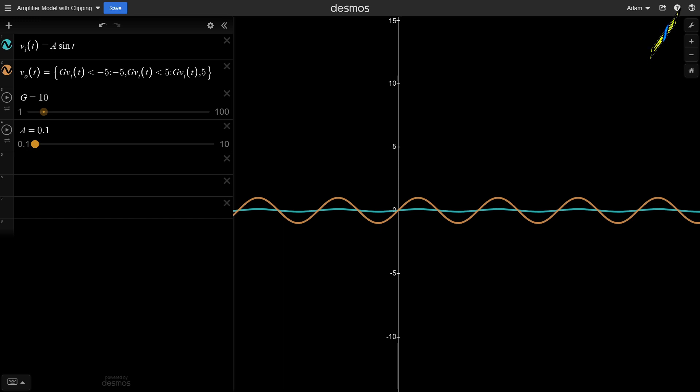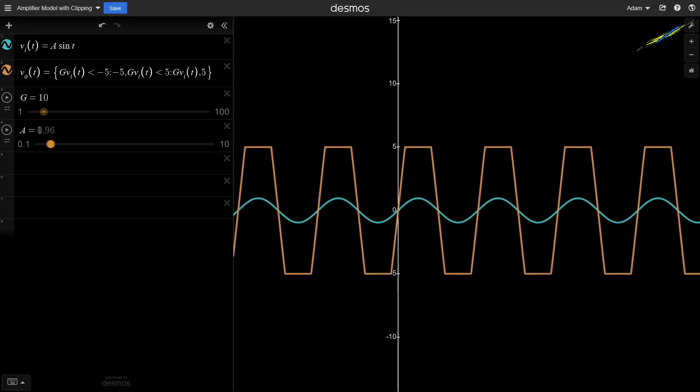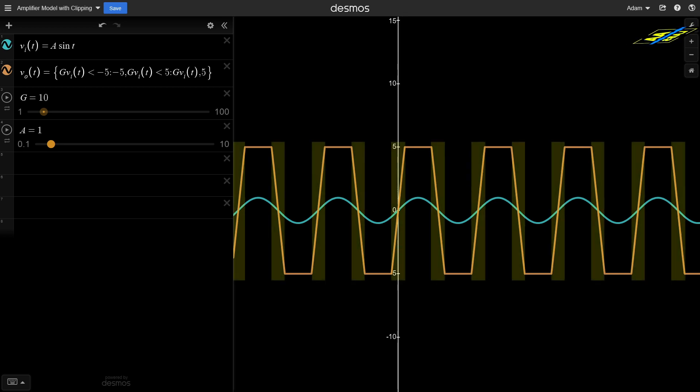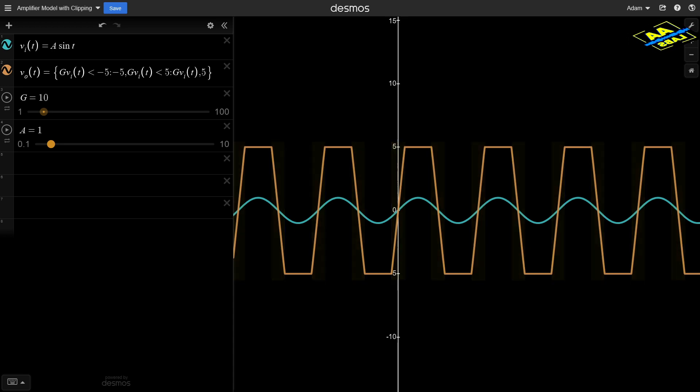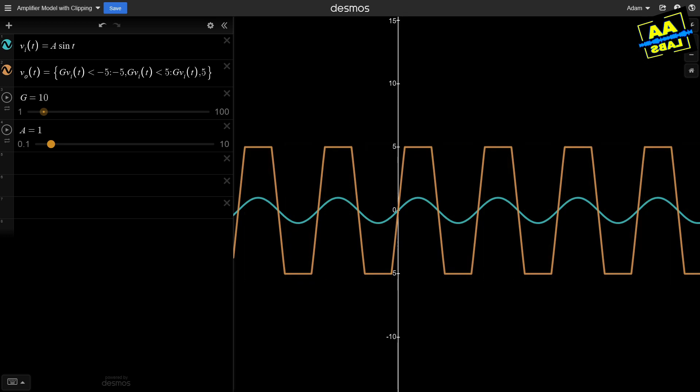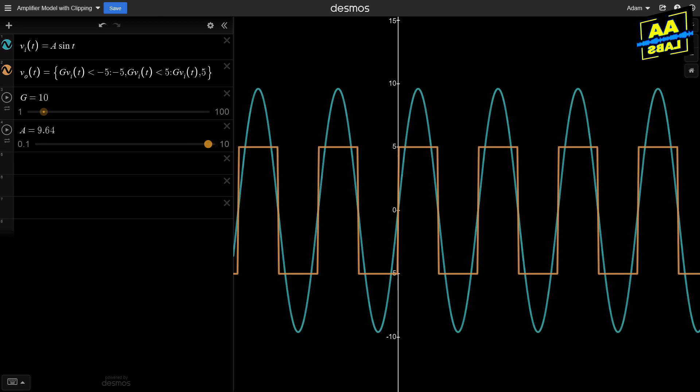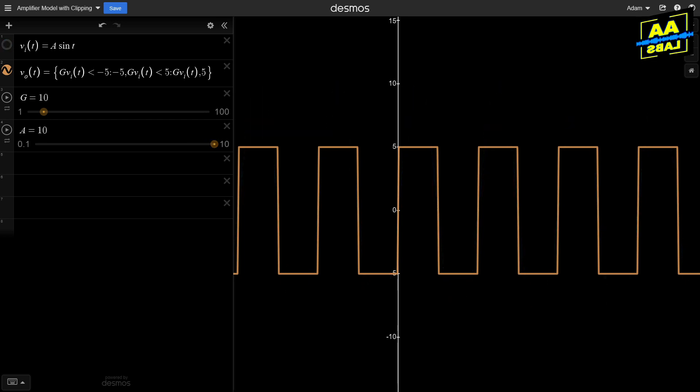For example, let's say we have an amplifier with gain 10 and a saturating voltage of plus or minus 5 volts. We then input a sine wave with amplitude 1. On the output, the shape of the sinusoid is only faithfully represented for the parts of the cycle when the magnitude of the input is less than a half volt. When above this limit, the output gets pegged to plus or minus 5 volts. The output is said to be clipped. If we increase the amplitude of the input sine wave, the output basically becomes a square wave. So, visually on the waveform, clipping occurs.